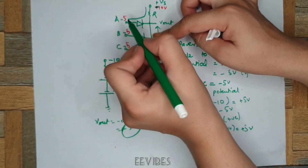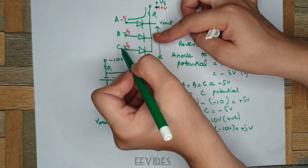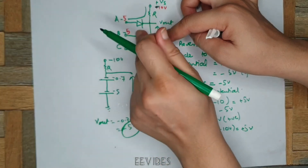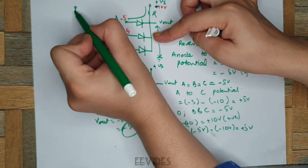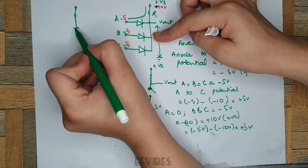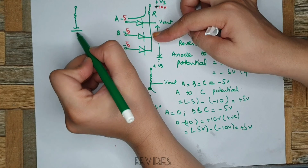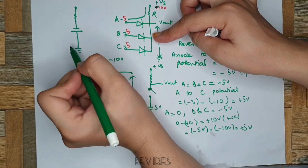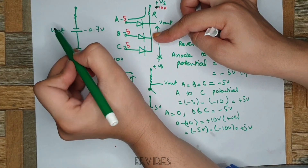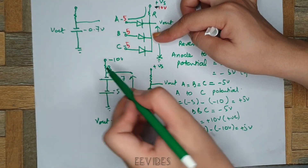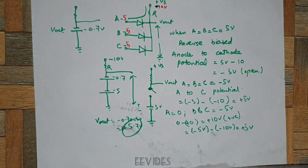Let's find the output voltage when A equals 0 volts and B and C equal minus 5 volts. Since both D2 and D3 are open and conduction takes place through diode D1, which acts as a closed switch, the input is grounded through D1 and you will have minus 0.7 volts at the output terminal. I hope the idea is clear. If you have any questions, drop them in the comment box and I will try my best to answer. Thank you for watching, take care.